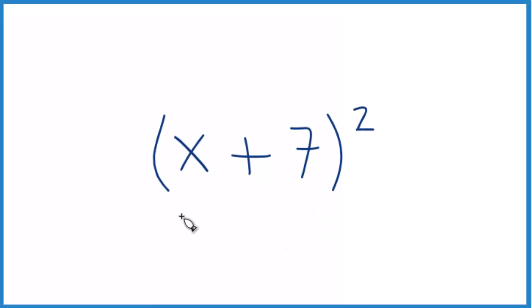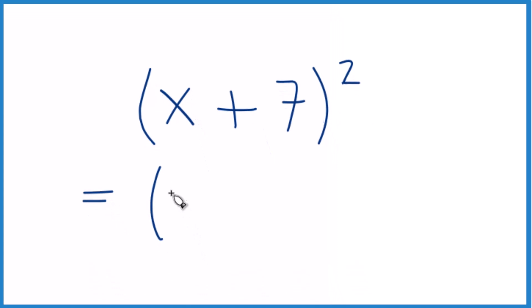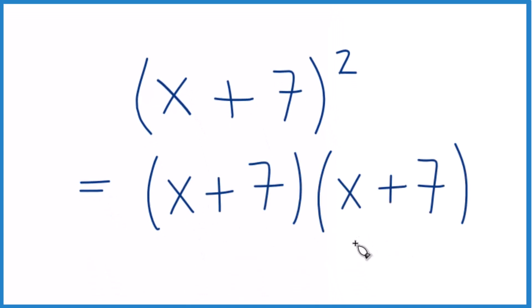Let's expand and simplify x plus 7 squared. So here's how we do it. x plus 7 squared, we could just write that like this: x plus 7 times x plus 7. So that's the same as x plus 7 squared.